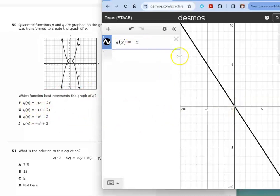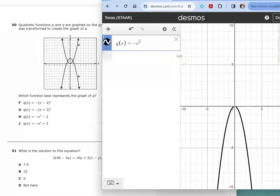Let's see. Negative X squared minus 2. We'll notice the vertex is moved down 2 and it's supposed to be moved up 2. So the correct answer choice was J. Q of X equals negative X squared plus 2.